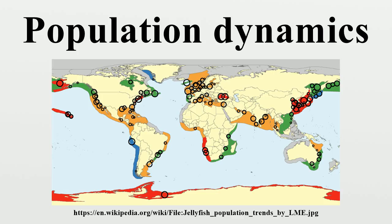Population dynamics overlaps with another active area of research in mathematical biology: mathematical epidemiology, the study of infectious disease affecting populations. Various models of viral spread have been proposed and analyzed, and provide important results that may be applied to health policy decisions.